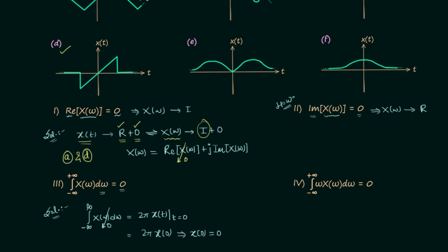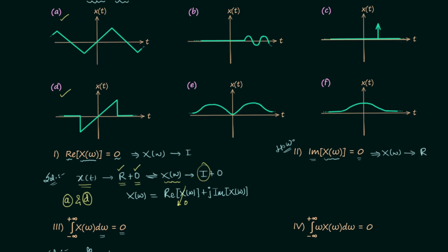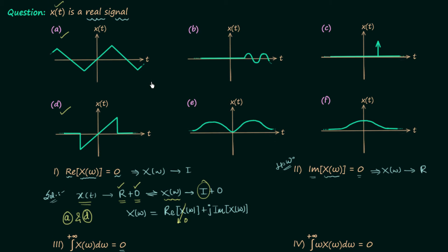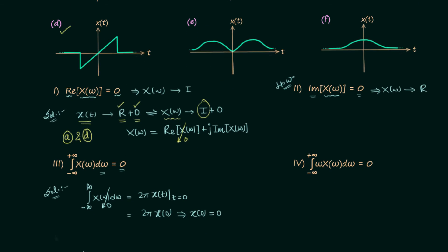Now we look at the signal waveforms to find whether each signal equals 0 at t = 0. Signal A is equal to 0 at t = 0. Signal B is also equal to 0. Signal C is also equal to 0. Signal D is also equal to 0. Signal E is equal to 0. Signal F is not equal to 0. So the answer for part 3 is signals A, B, C, D, and E.